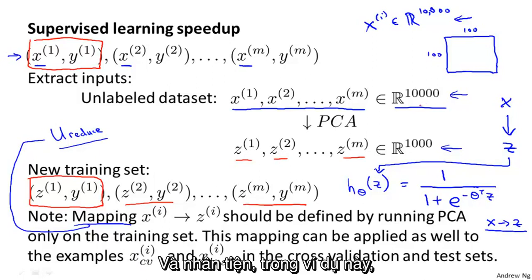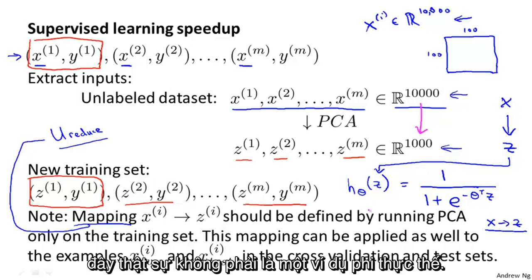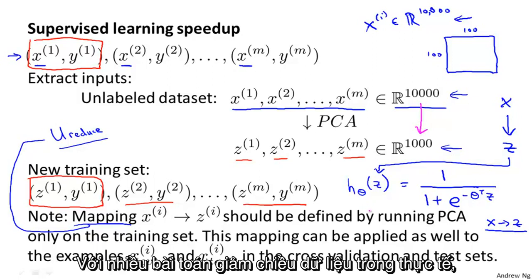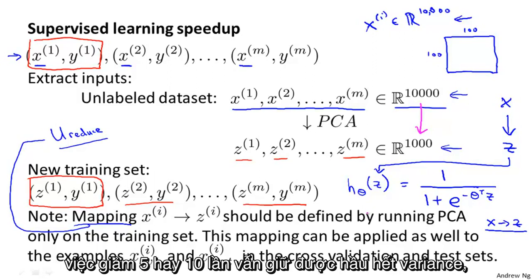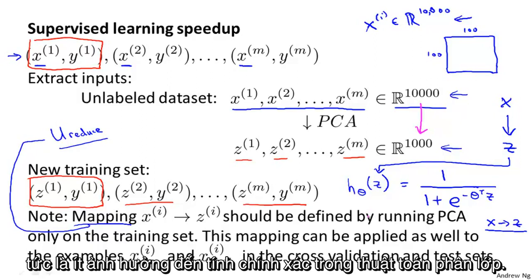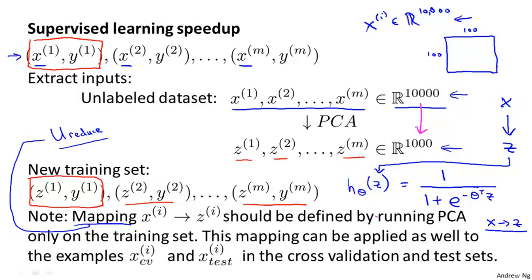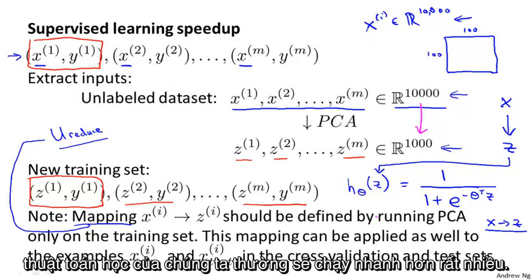Reducing the data from 10,000 dimensional to 1,000 dimensional is actually not that unrealistic. For many problems, we can reduce the dimension of our data by 5x or even 10x and still retain most of the variance, barely affecting the classification accuracy of the learning algorithm. By working with low-dimensional data, a learning algorithm can often run much, much faster.